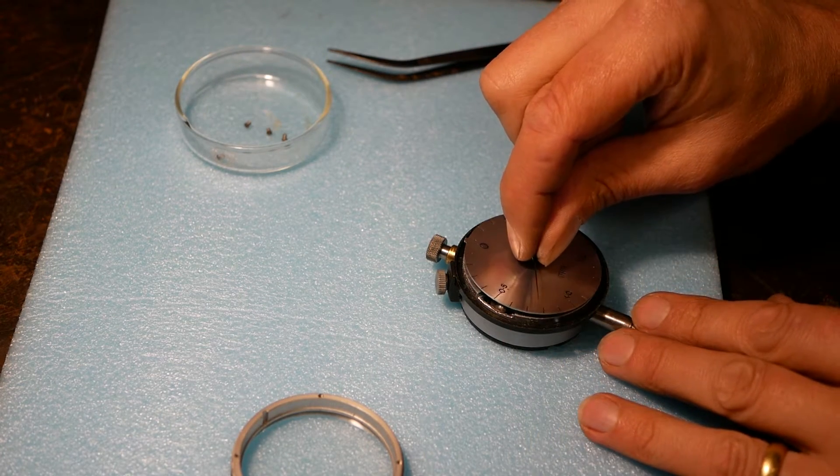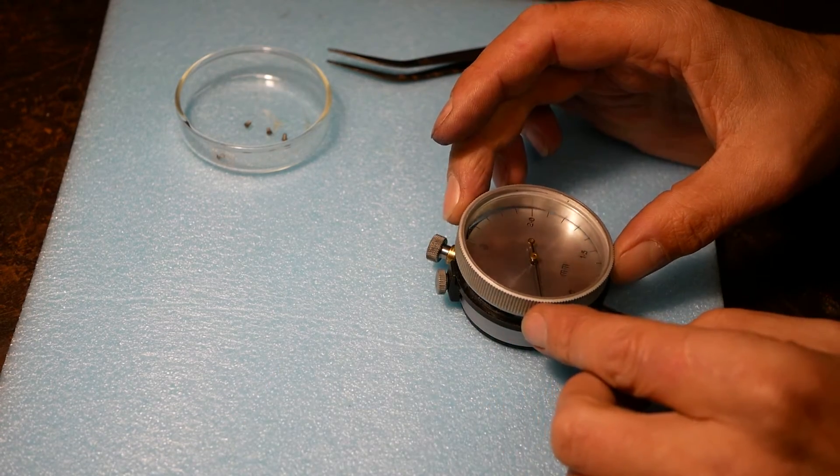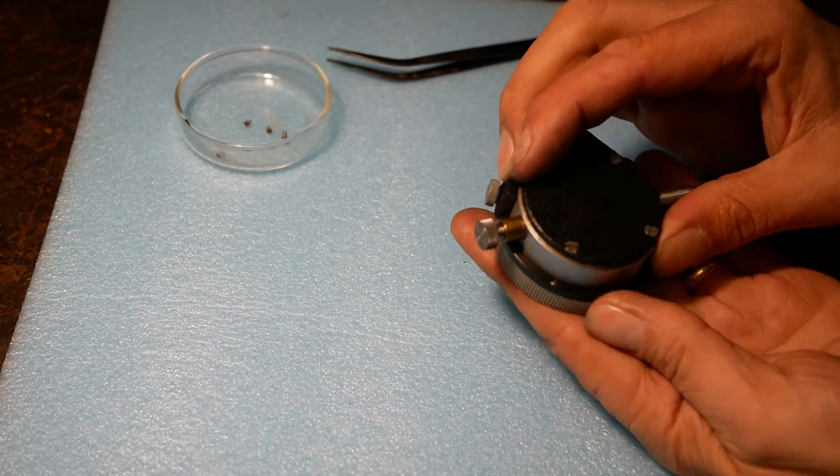If you're interested in taking dial making to the next stage I'd encourage you to look into guilloché which is an advanced embellishment technique commonly used in watchmaking. Clickspring does some excellent videos explaining this process.